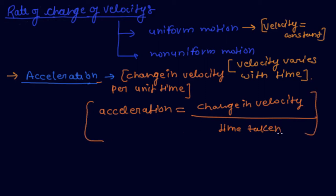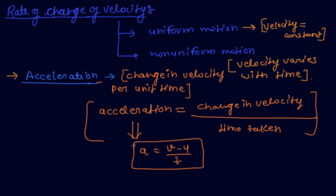Acceleration is represented by small 'a'. So, a equals final velocity minus initial velocity upon time. This is the formula of acceleration. The SI unit of acceleration is meter per second squared.